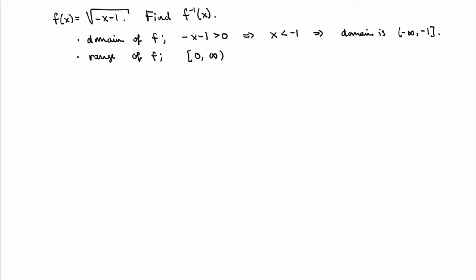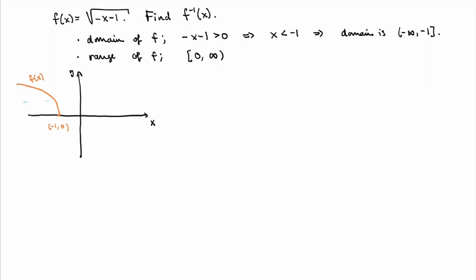The next step is to check that the function is one-to-one. Here it's pretty clear: for any two different numbers x₁ and x₂, their square roots are always different, so f(x₁) ≠ f(x₂) and the function is one-to-one. I could also sketch the graph — the function is a square root that opens on the negative side — and verify it passes the horizontal line test, since any horizontal line intersects it at most once.